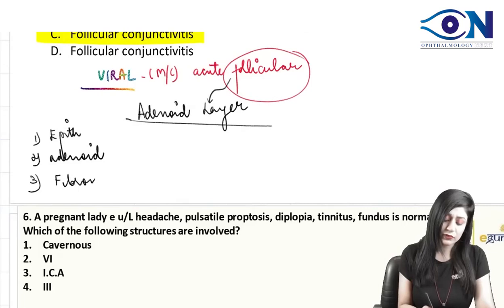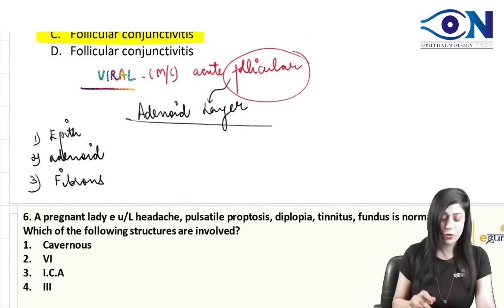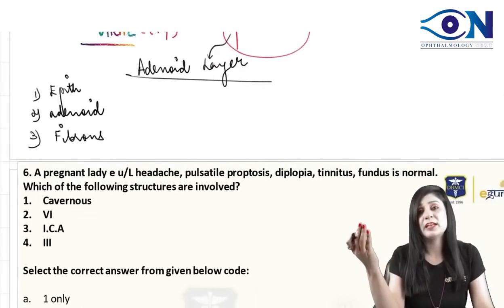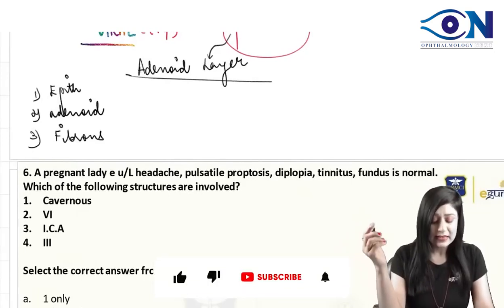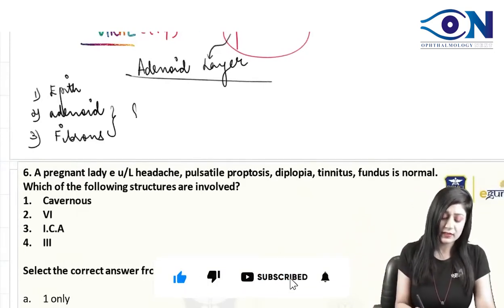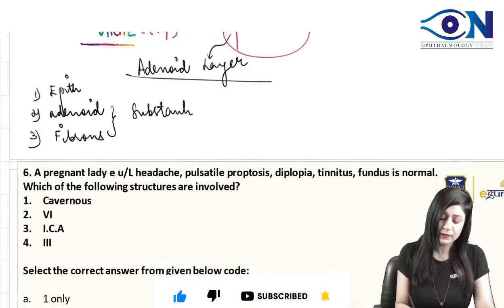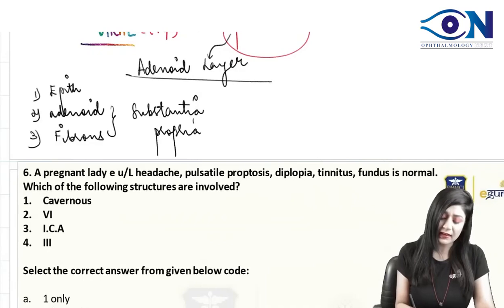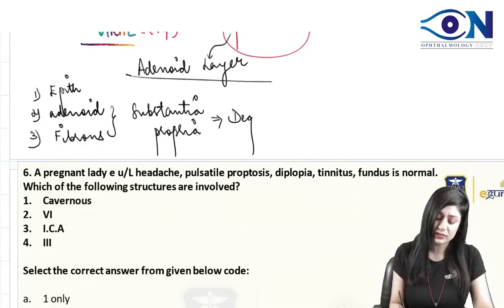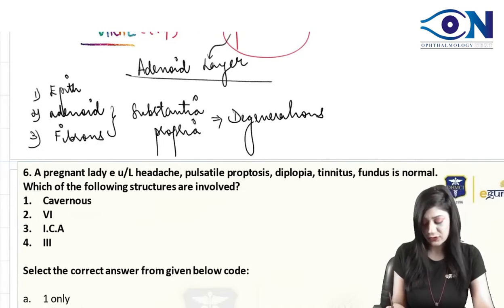All three layers have different specialities. The epithelium, adenoid layer, and fibrous layer each have unique characteristics. The adenoid layer contains follicles. Together, the adenoid and fibrous layers are called the substantia propria. In the substantia propria, you will find the degenerations.